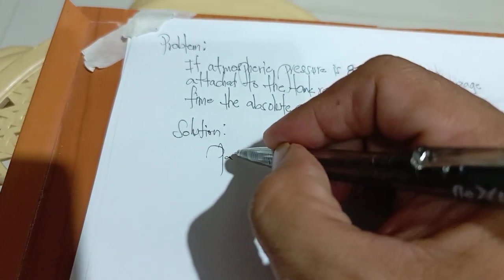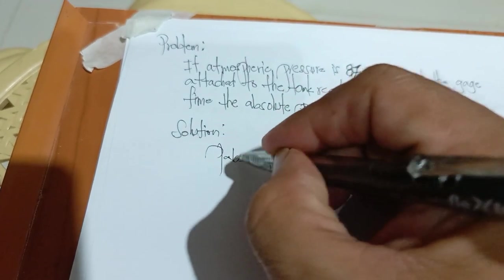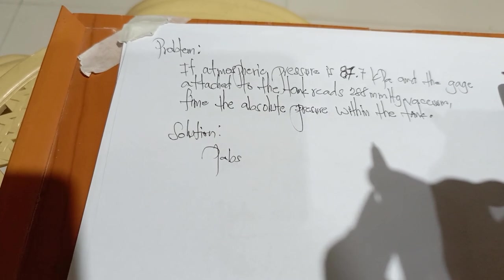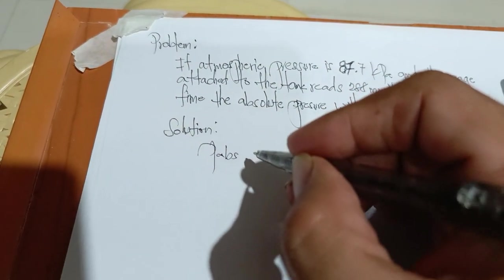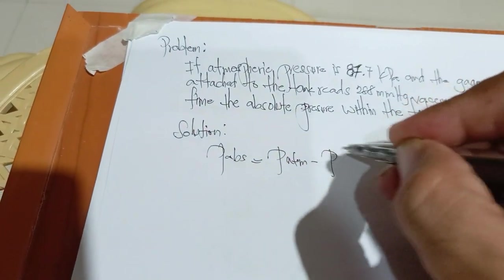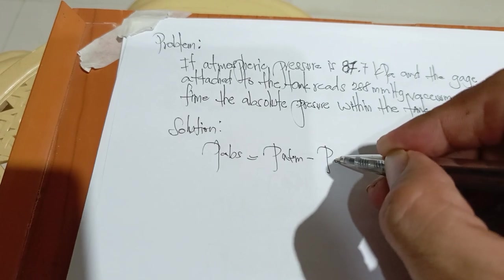Solution: Absolute pressure is equals atmospheric pressure minus gauge pressure.